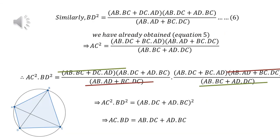To complete the problem, we can in the same way obtain cos D and then calculate BD square to obtain the expression as given in equation 6. After that we have simply multiplied equation 5 and 6 to get the required result.